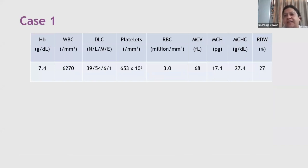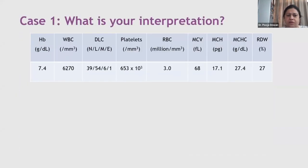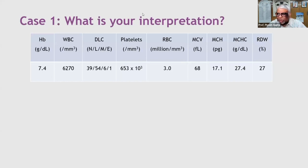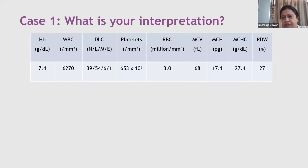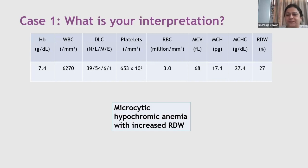Students suggest the smear will show microcytic hypochromic anemia. One student suggests dimorphic anemia, but Dr. Puja prefers to confirm this after seeing the peripheral smear rather than before. This is a microcytic hypochromic picture with an elevated RDW of 27.